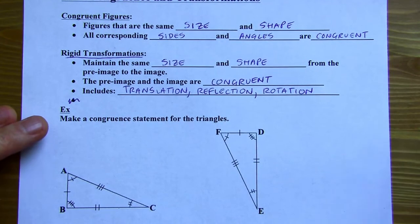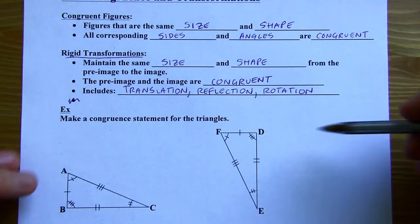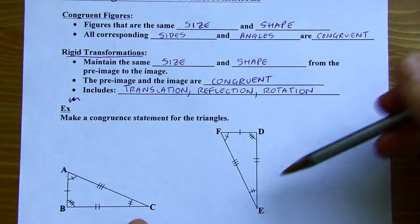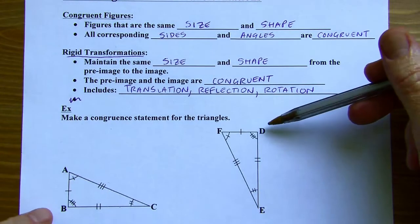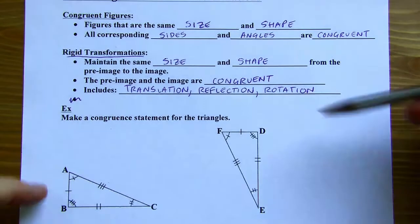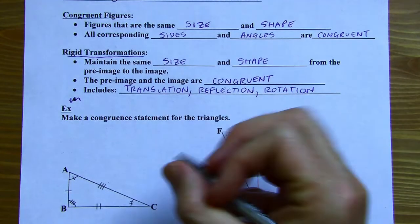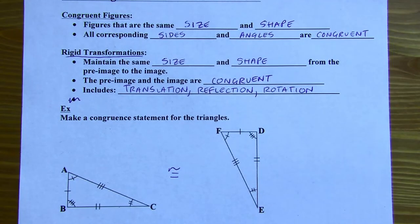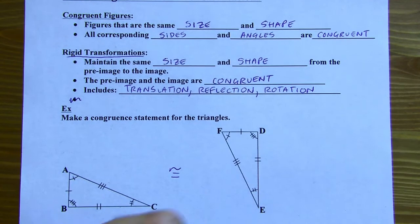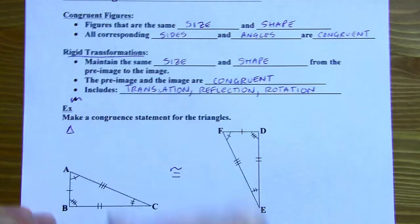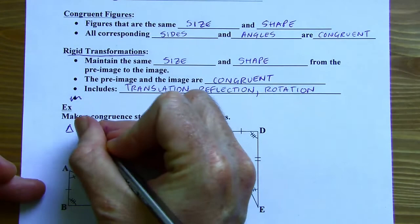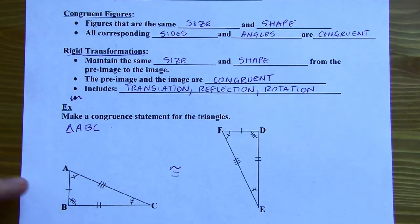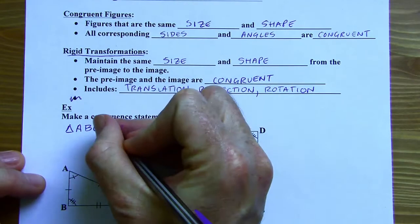Let's make a congruence statement for these two triangles. I can see all the angles are congruent from one figure to the next: A is congruent to F, C is congruent to E, B is congruent to D. The sides also have corresponding congruent parts, so the entire triangles are congruent. For the congruence statement, I'll name the first triangle — I'll call it triangle ABC. You could call it CBA; it doesn't have to be alphabetical.